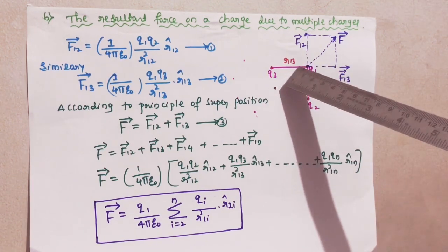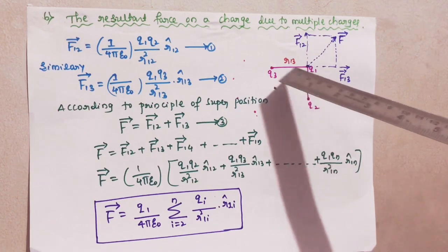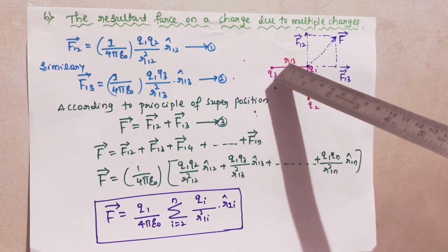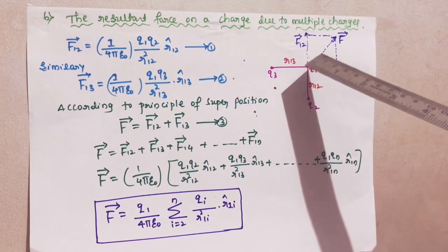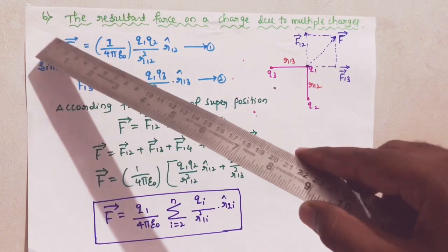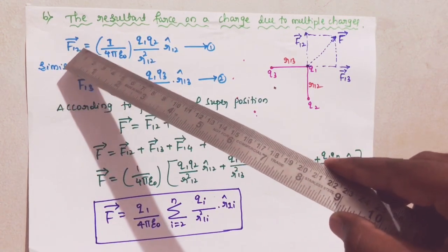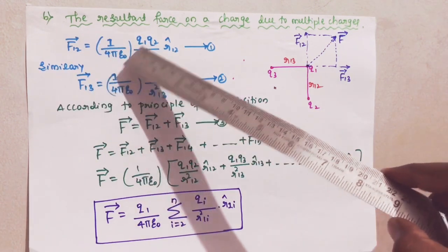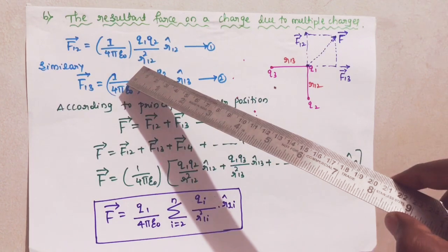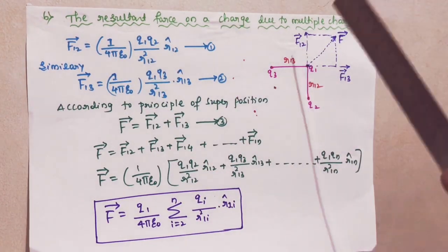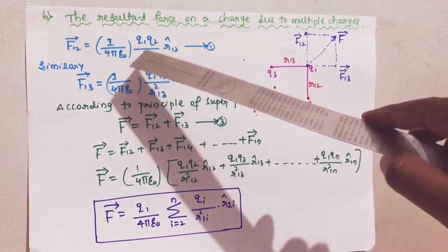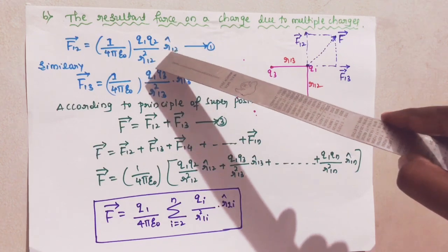Here r12 indicates the distance between the point charges q1 and q2. Here r13 indicates the distance between the point charges q1 and q3. This is one system. The force on q1 due to q2, from using Coulomb's law, is vector f12 equal to 1 over 4πε₀ times q1 q2 divided by r²₁₂ into unit vector r-cap₁₂. This is equation number one.